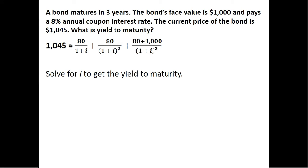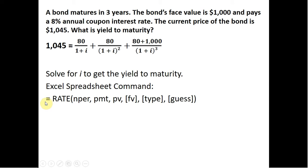So we need to solve for I to get the yield to maturity. I'm going to show you how to do this in Excel. So we're going to use Excel's spreadsheet command called RATE. And these are the parameters that we're going to input into the RATE command for Excel.